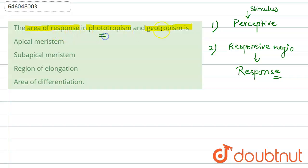is the perceptive zone, and the region of elongation is known as the responsive zone, what we call the area of response or responsive